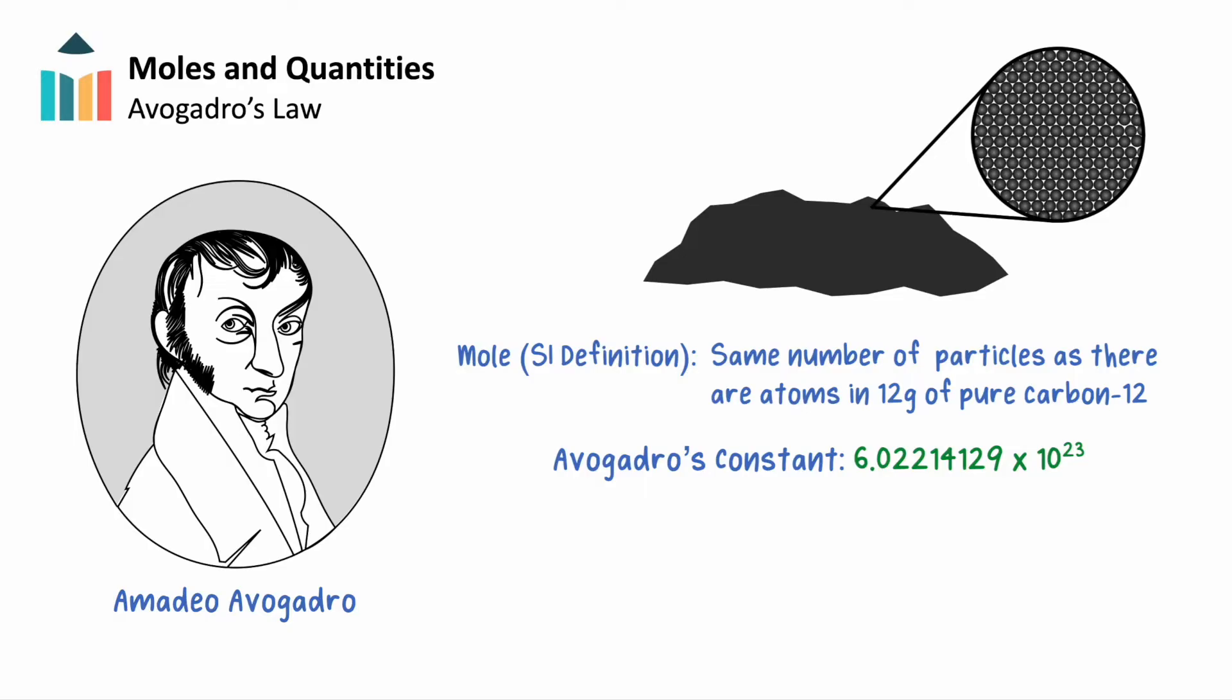Avogadro's number is huge. In fact, it's simply unimaginable. To put this into perspective, think about a ball used for table tennis, the standard size of about 40mm in diameter.